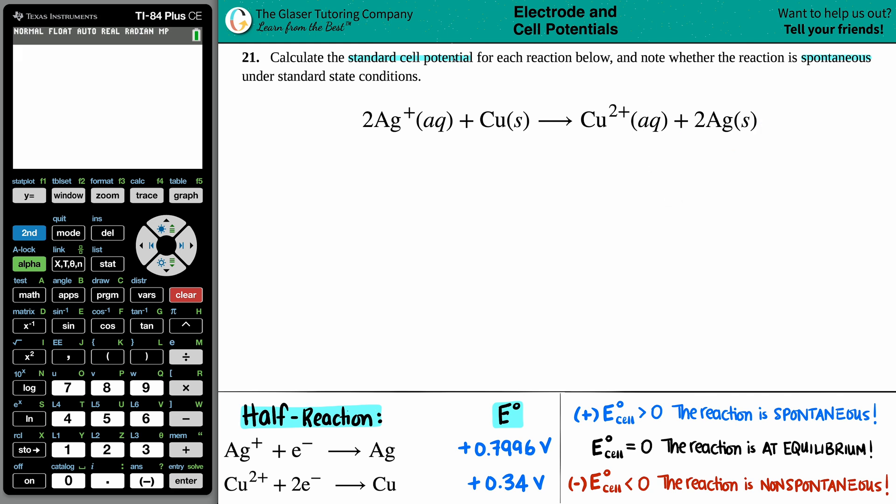From there, we want to find the standard cell potential. That's an E cell. Anytime they're asking for a standard cell potential, we're always trying to find an E cell value. This notch at the top means we're under standard state conditions, and it does say standard here, so we're good to go.